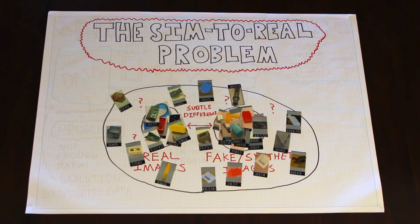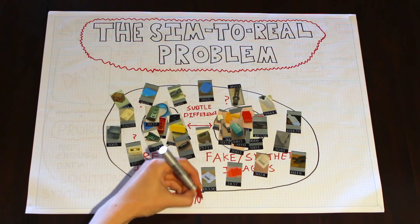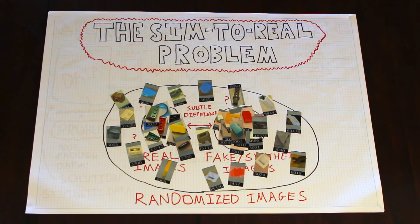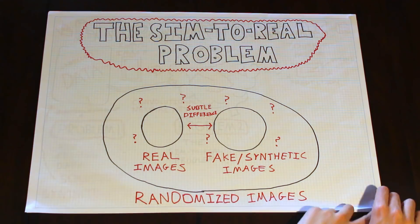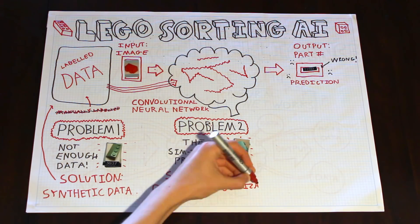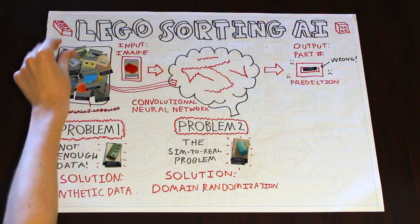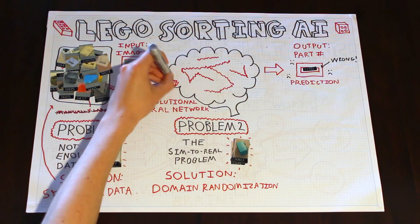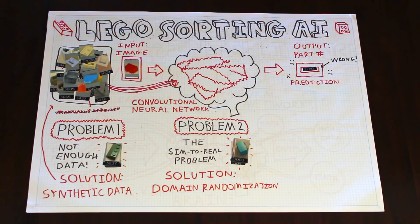These randomized images vary hugely in material, color, and lighting. Now, we can take these much more variable images and feed them into the neural network to build up much better quality connections in the brain.